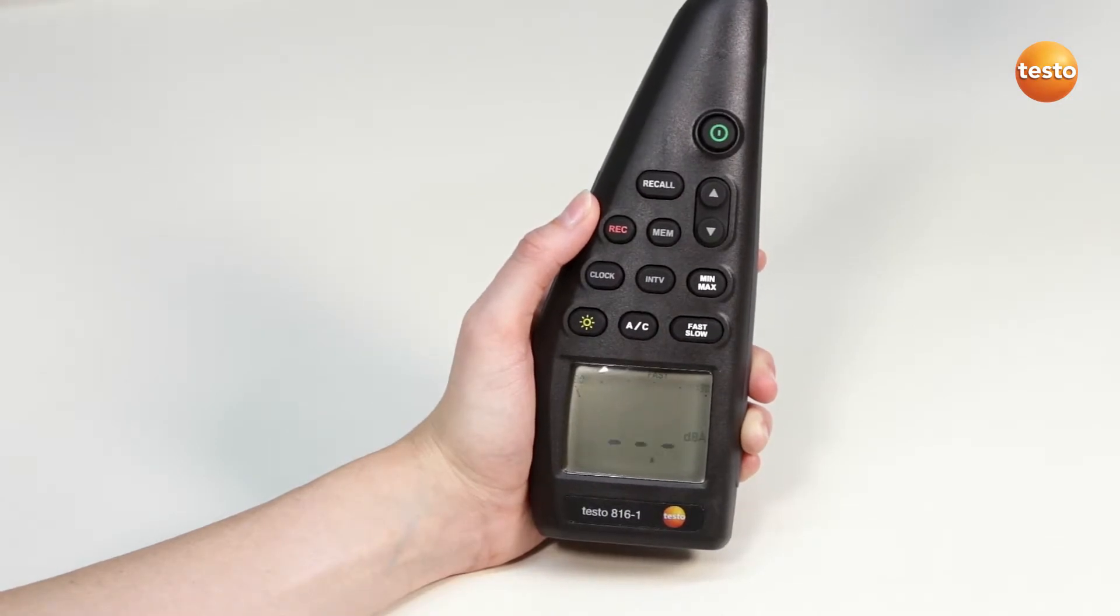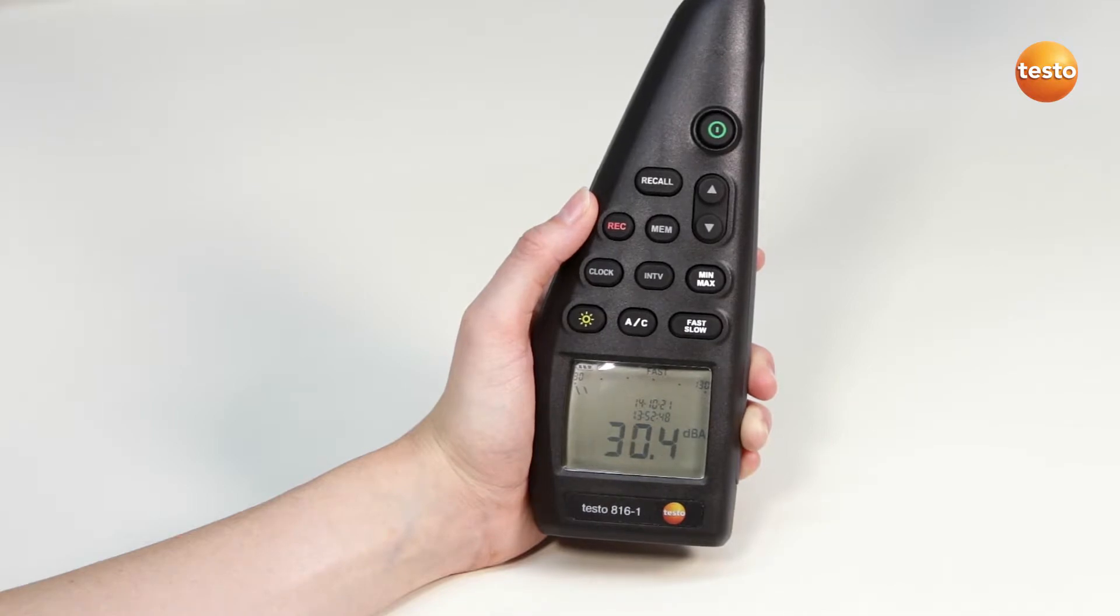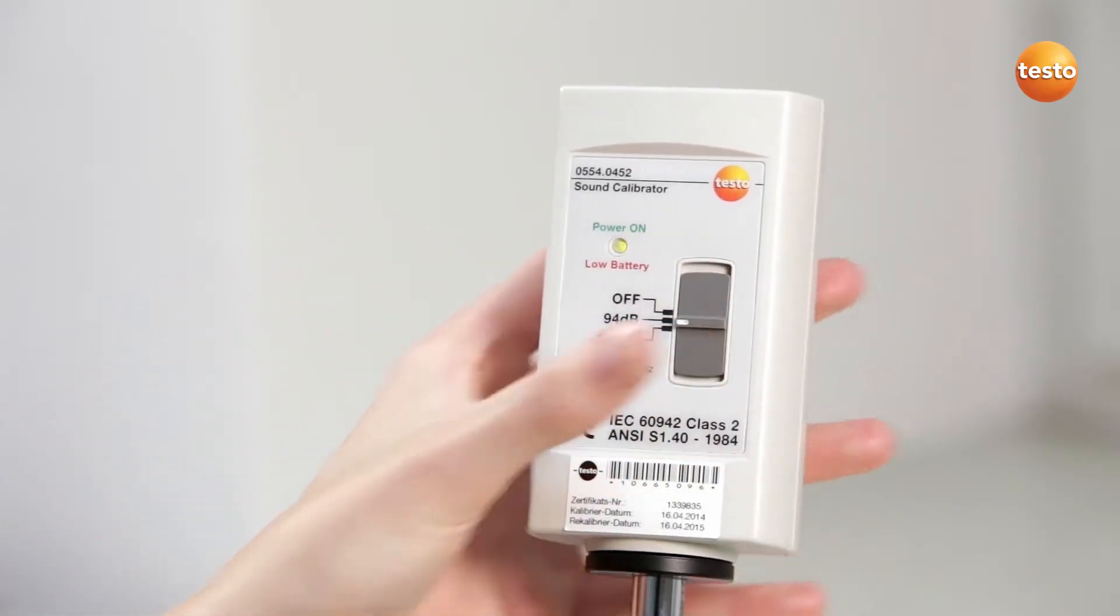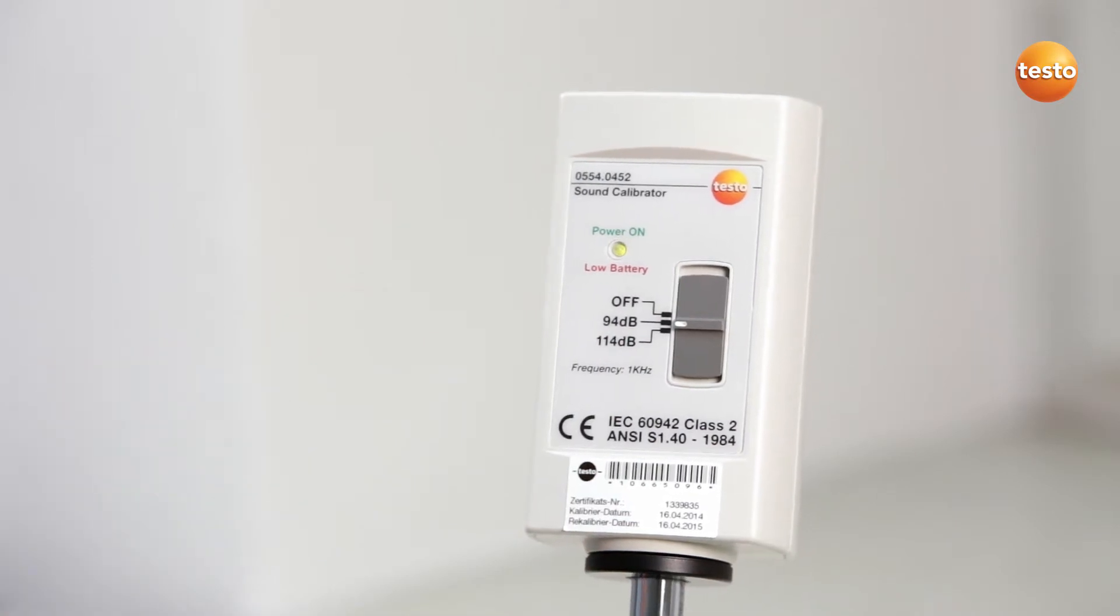Make sure the frequency weighting is set to A and the time weighting to fast. The regulator on the calibrator is now set at the middle position. This gives the measuring instrument 94 dB.